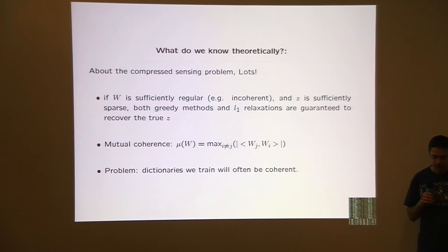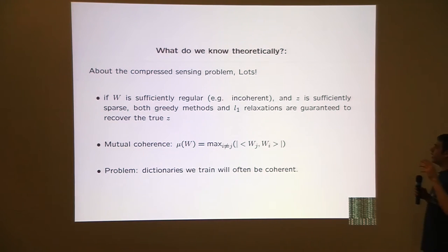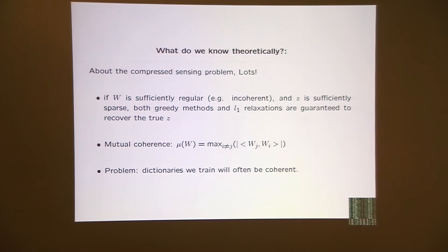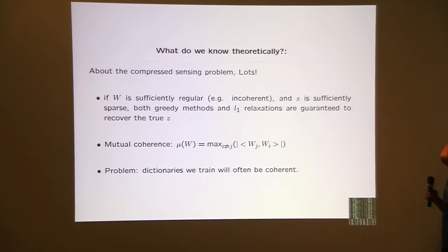Now let's go back to why. What do we know theoretically? We know lots about compressive sensing — but that doesn't really answer why we'd want to use sparse modeling. If W is sufficiently regular (measured by incoherency) and Z is sparse, then greedy and L1 methods are guaranteed to recover the true Z. Usually it suffices to take a random W or Hadamard W.